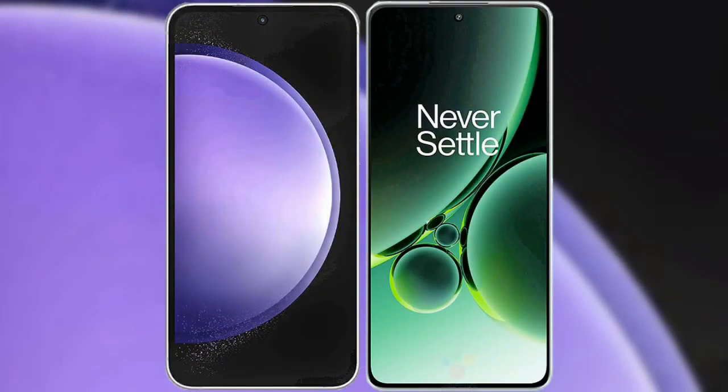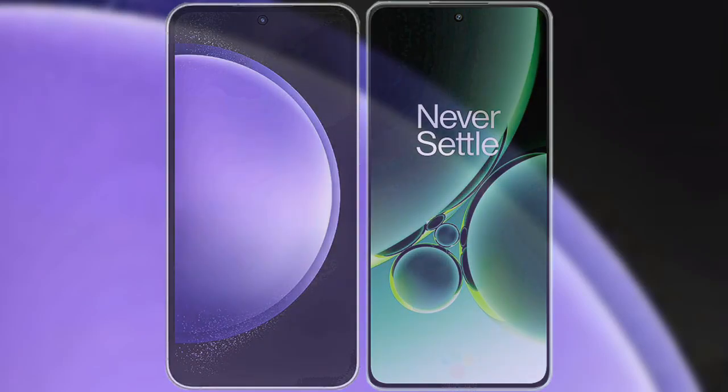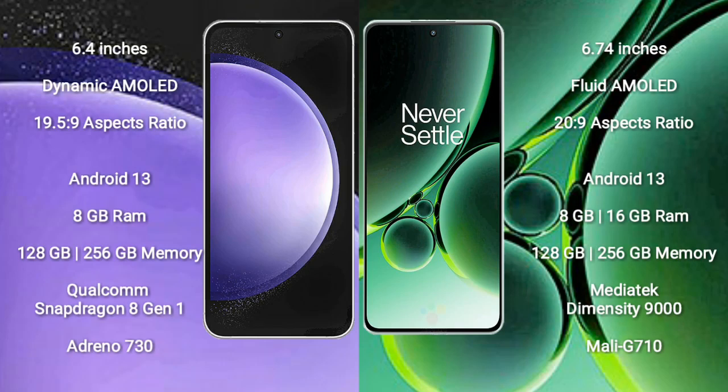I will compare the new Samsung Galaxy S23 FE with OnePlus Nord 3. Samsung Galaxy S23 FE comes with a 6.4-inch dynamic AMOLED display and aspect ratio 19.5:9. OnePlus Nord 3 comes with a 6.74-inch fluid AMOLED display and aspect ratio 20:9.